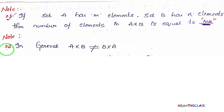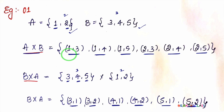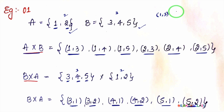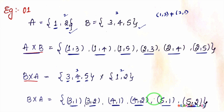Point 2: In general, A cross B is not equal to B cross A. Using the previous example, the ordered pair 1 comma 3 appears in A cross B, but in B cross A we have 3 comma 1 instead. Ordered pair 1 comma 3 is different from ordered pair 3 comma 1, so A cross B is not equal to B cross A.